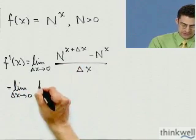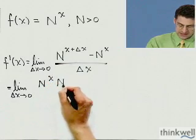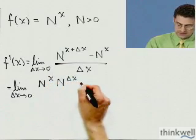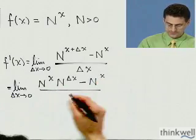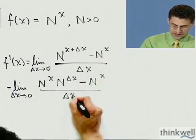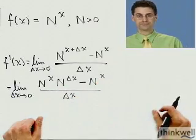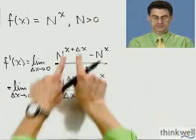In fact, this can be rewritten as N^x times N^Δx minus N^x, all over Δx. Because you just add the exponents to get that.